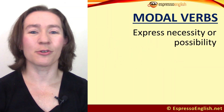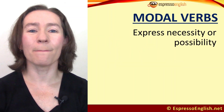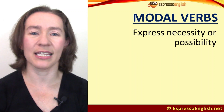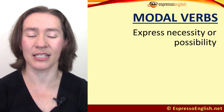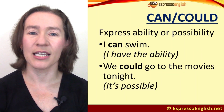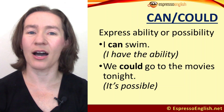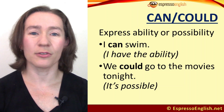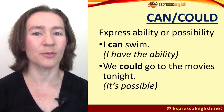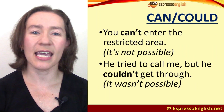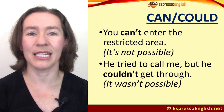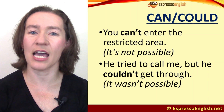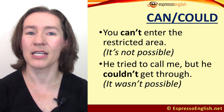Now that you know the basic helping verbs, let's go through the modal helping verbs. Modal helping verbs modify the main verb by expressing necessity or possibility. We use can and could to express ability and possibility. 'I can swim' means I have the ability to swim. 'We could go to the movies tonight' means it's possible. 'You can't enter the restricted area' — it's not possible. 'He couldn't get through' — it wasn't possible for him to reach me.